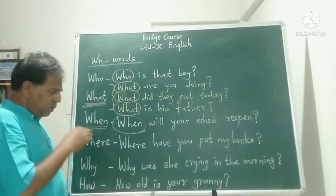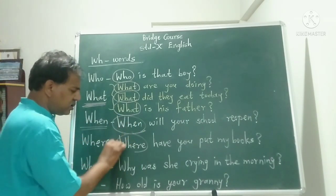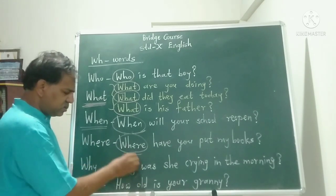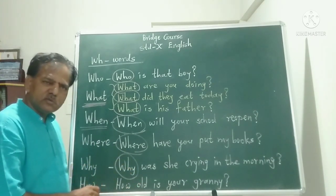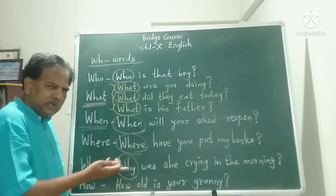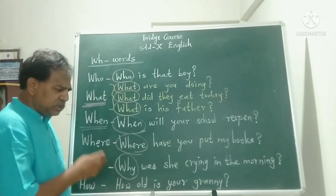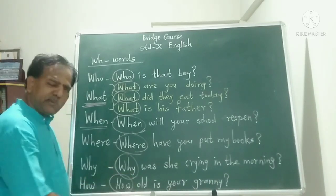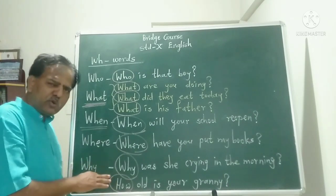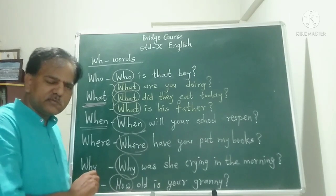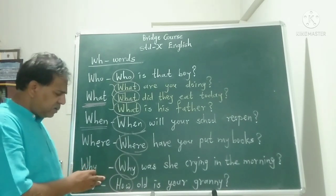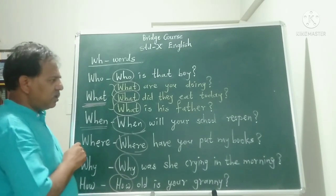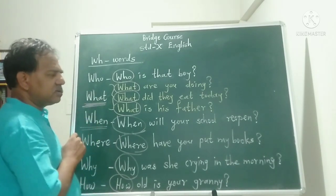'Where have you put my books?' — WHERE gives place. 'Why was she crying in the morning?' 'Because she was not feeling well.' — WHY gives reason. 'How old is your granny?' 'She is 80 years old.' — HOW OLD gives age or time span. 'How many books have you purchased?' — HOW MANY gives number. In this way, we can use these WH words in WH questions.